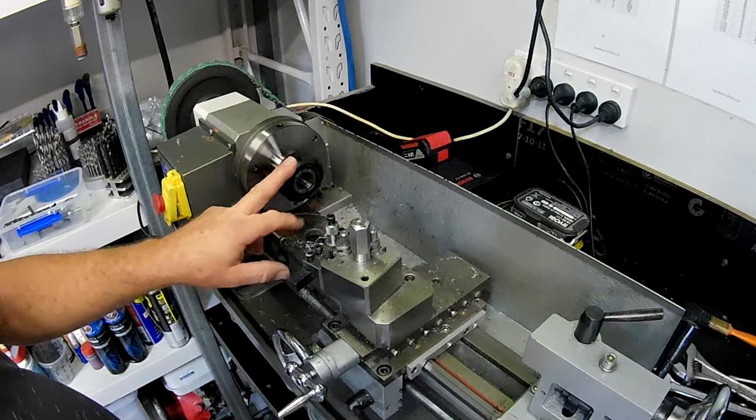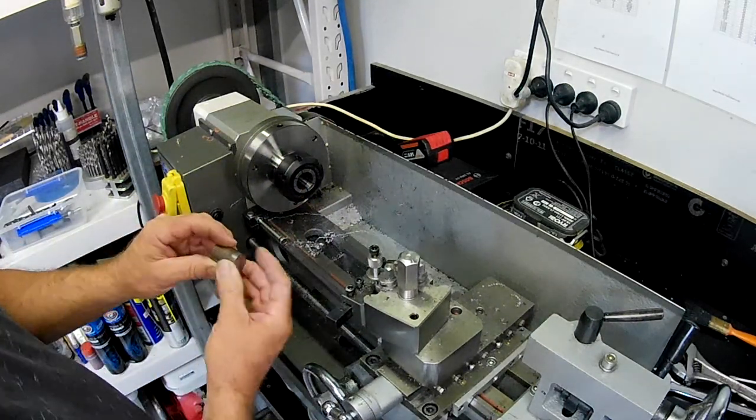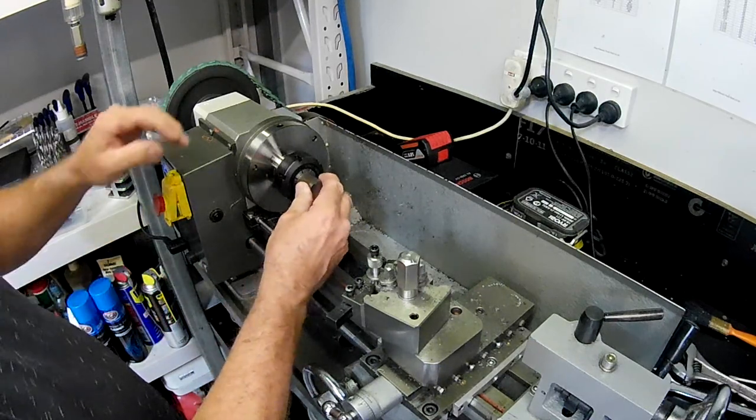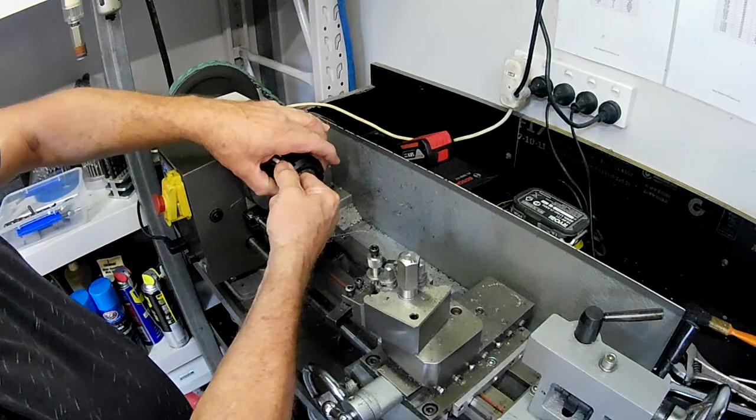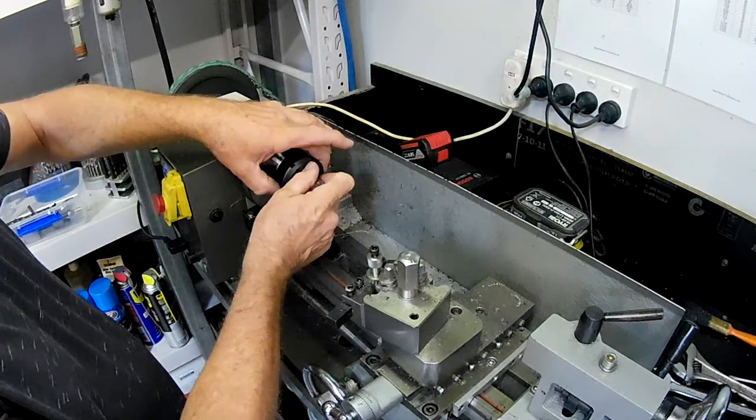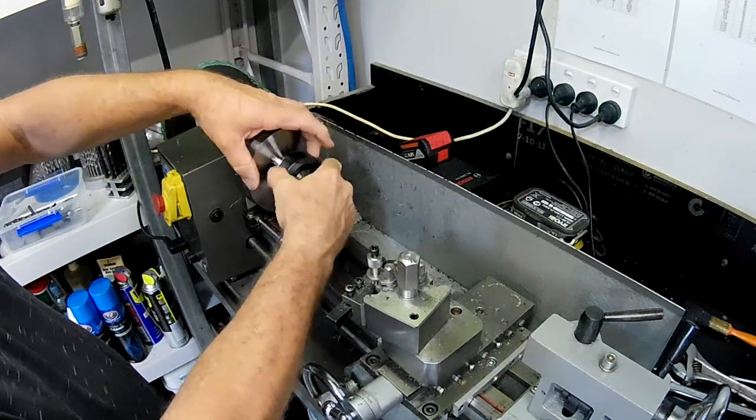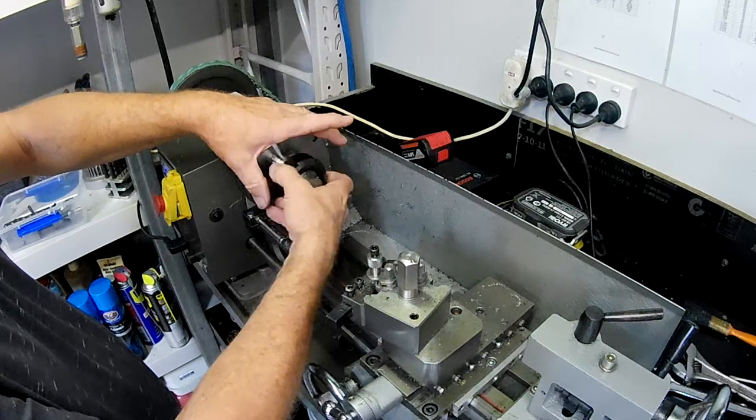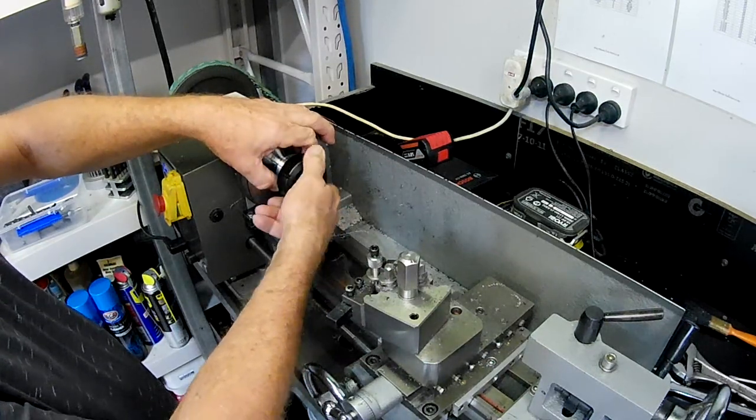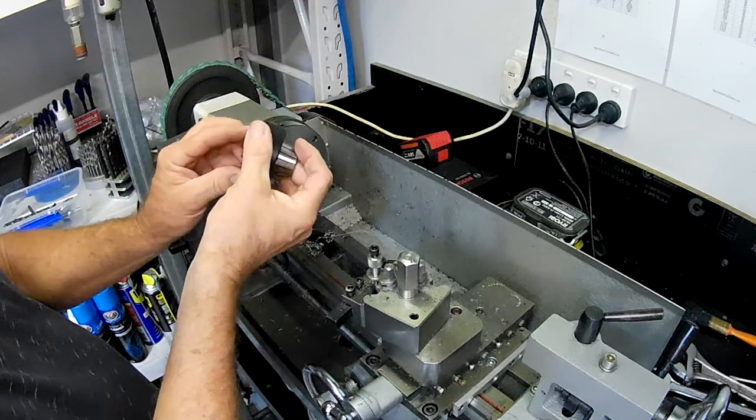Alright folks, I've just got a collet chuck set up in the mini lathe here with a 25 mil collet in it. This is just a bit of 25 mil stock. So I will get this in, like so. I'll take that right out. Doesn't want to play. There we go.